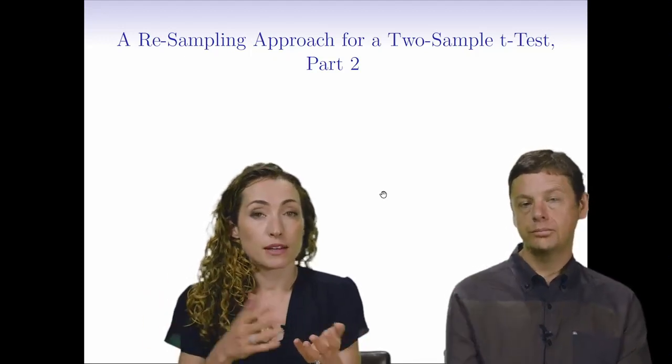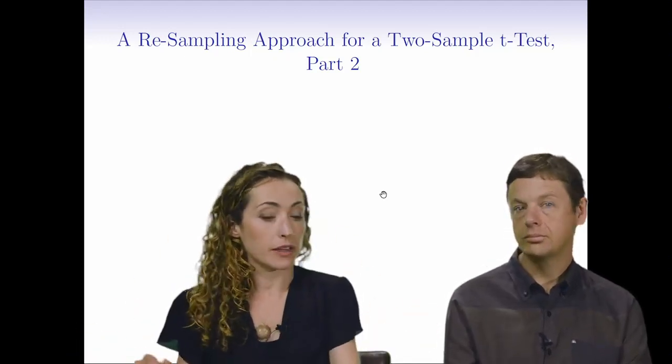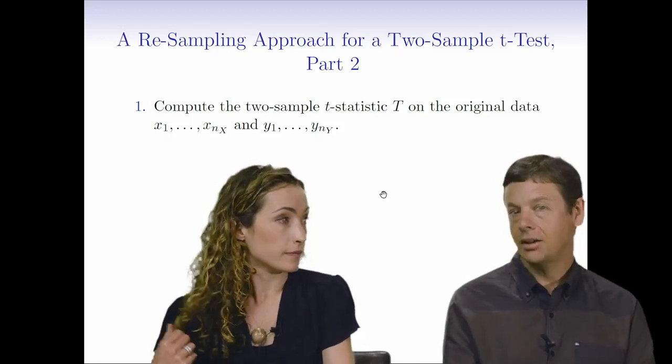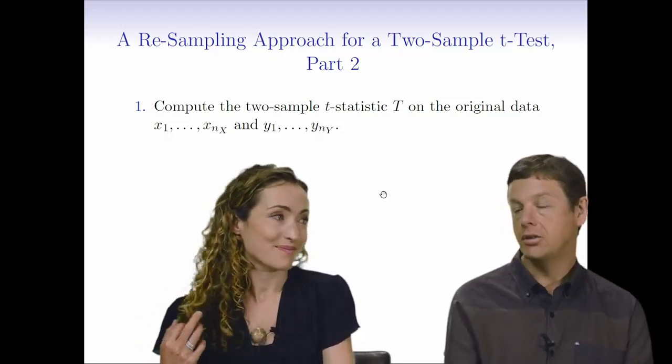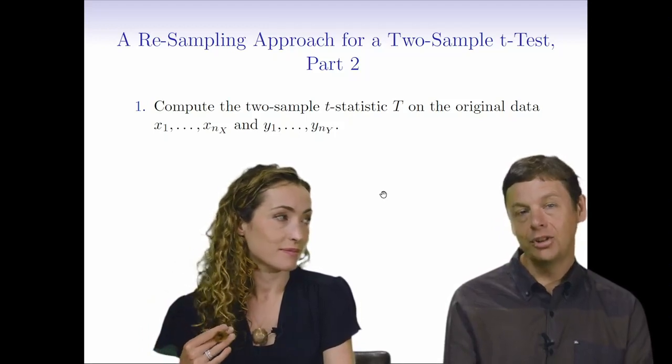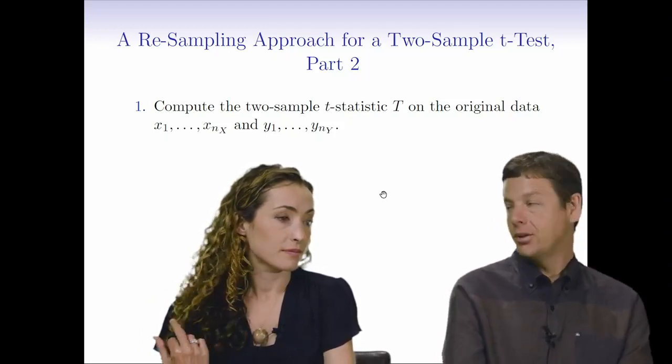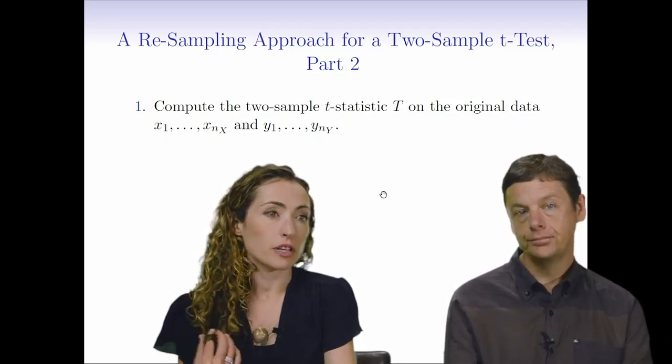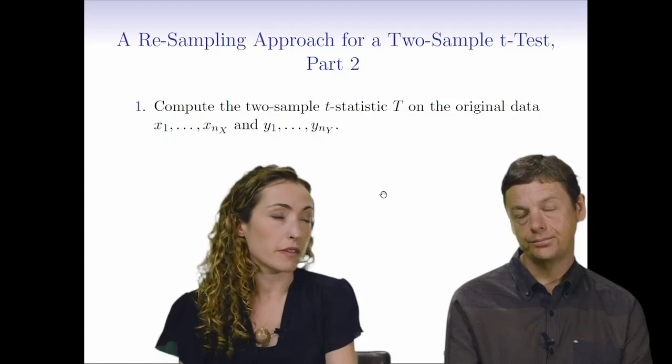I'm going to do that a huge number of times in order to simulate the null distribution. The idea here is that if I shuffle the data, I'm essentially guaranteeing that the null distribution is correct. Because even if there was a difference, once I've shuffled it, that difference will go away. Under the null distribution, it doesn't matter whether we've shuffled our data. It's all the same either way.